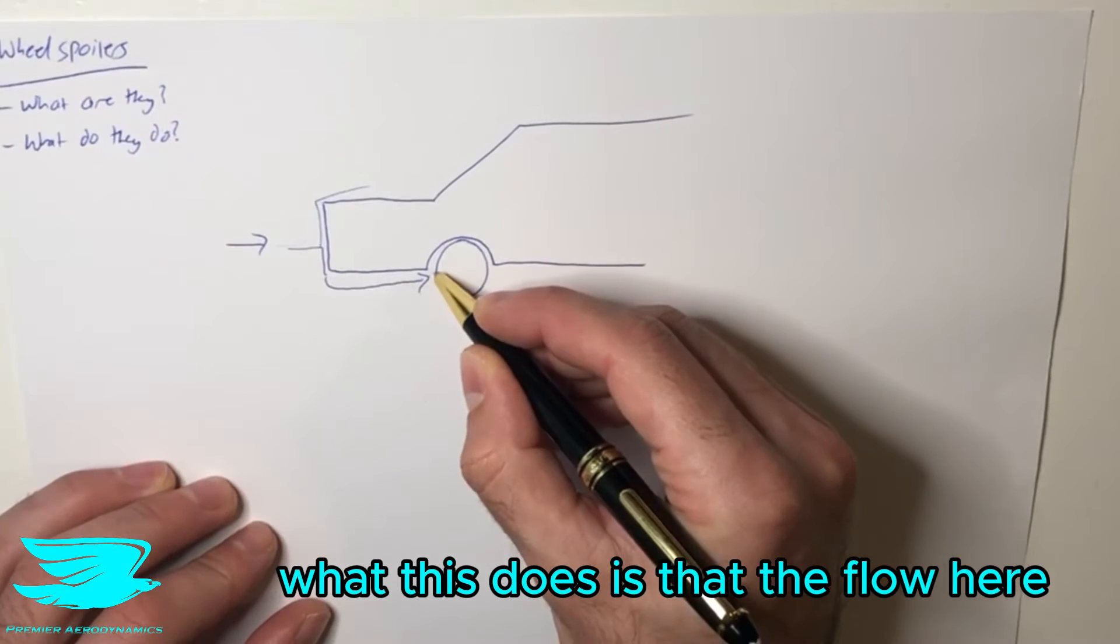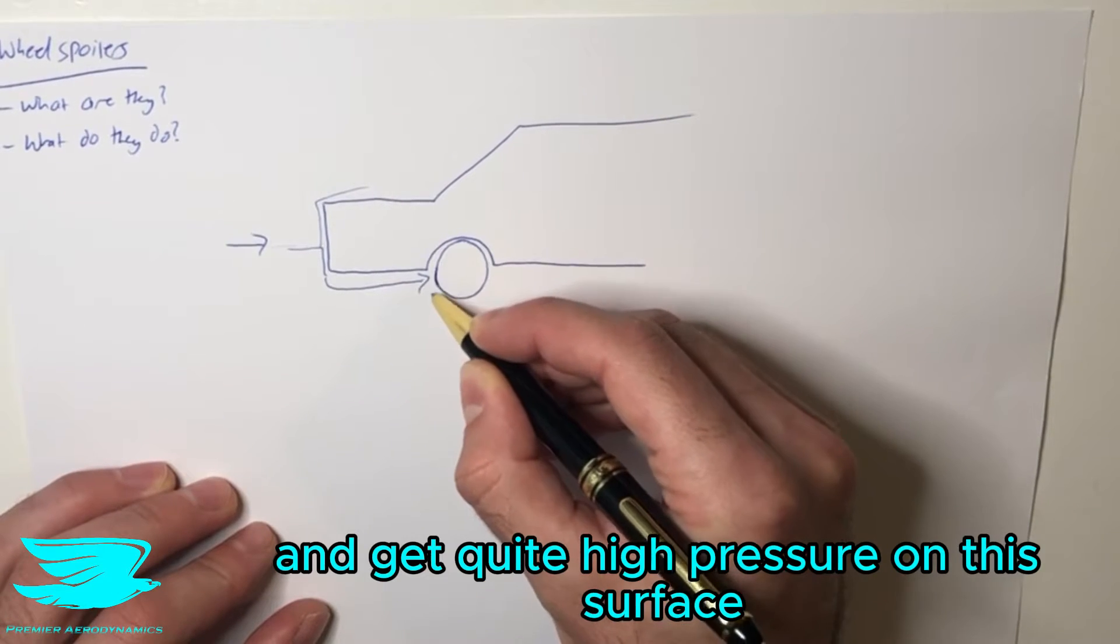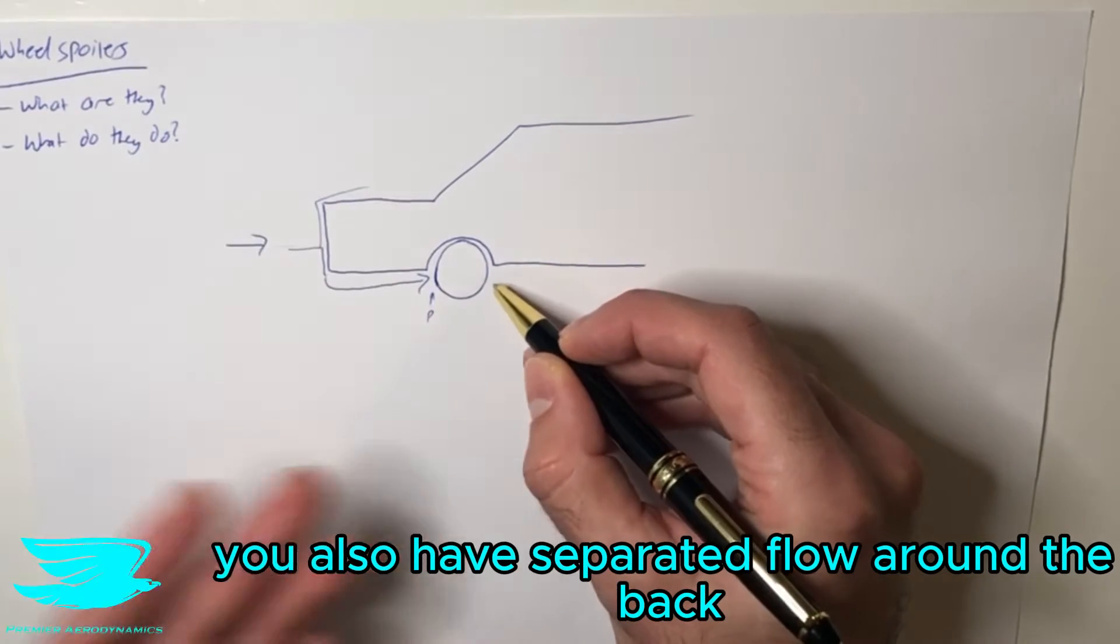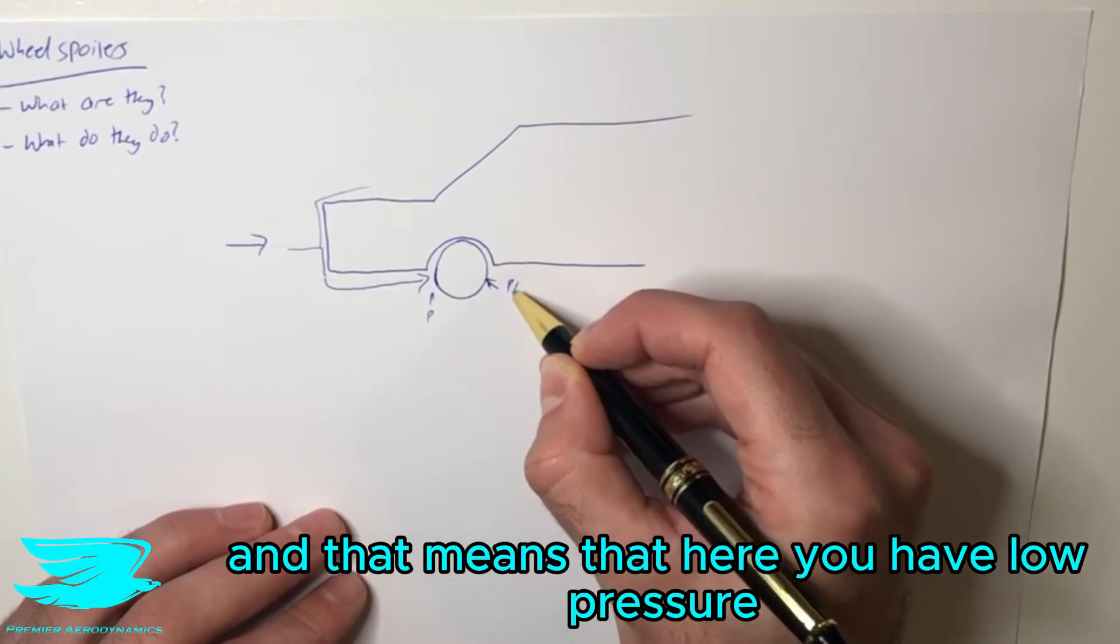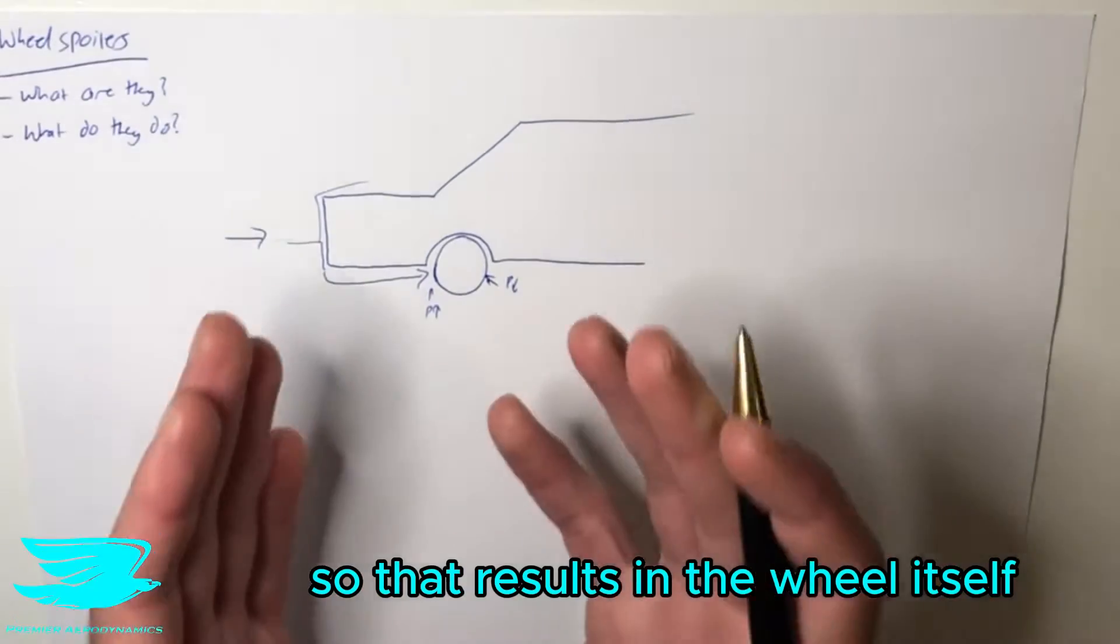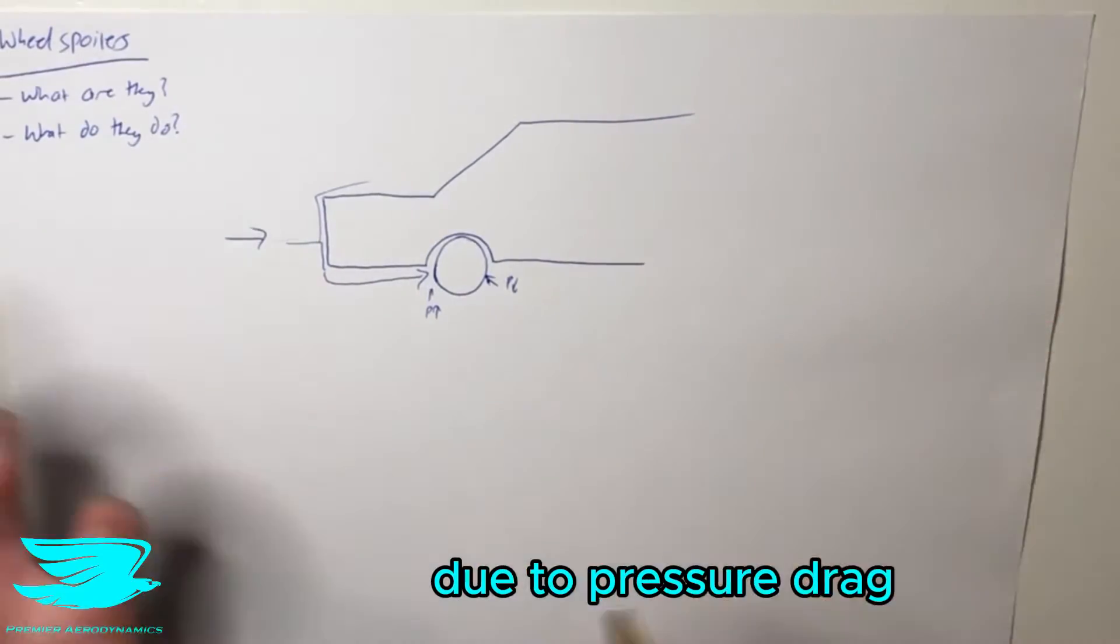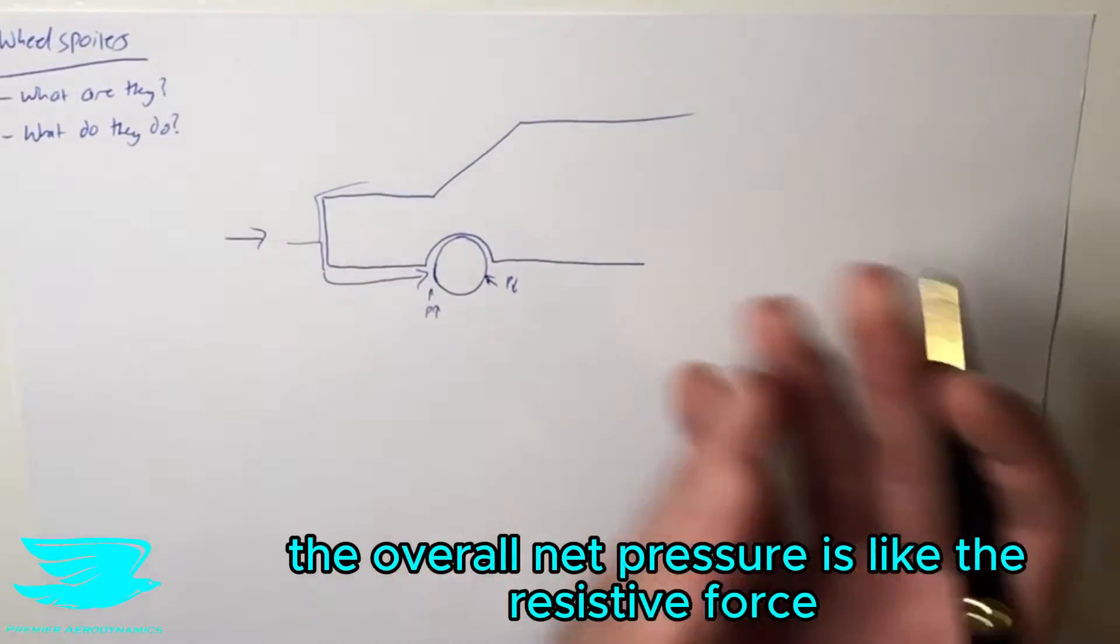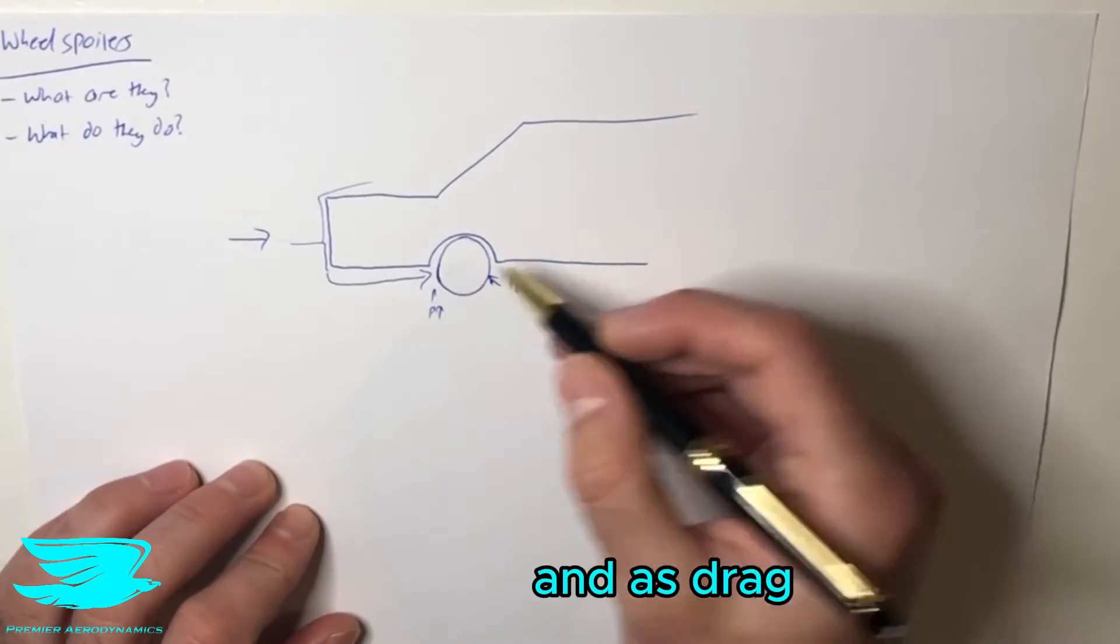What this does is the flow starts to decelerate and creates quite high pressure on this surface. You also have separated flow around the back, which means you have low pressure here. This results in the wheel having quite high drag, mainly due to pressure drag. High pressure up front, low pressure downstream. The overall net pressure is the resistive force, and that's drag.